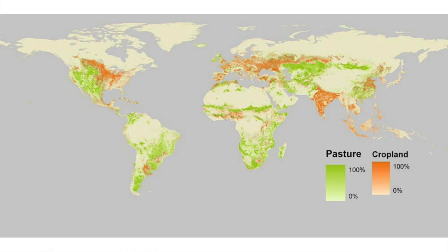Why is farming so important? If you look at this map of the world, the green areas are where we have pasture land and the orange areas are where we have cropland. Over 40% of the earth's surface is now used for agriculture. And if the areas where we're using agriculture are the areas capable of photosynthesizing — along with our forests — if we don't manage our agriculture properly, how can we bring more of that carbon dioxide back in?